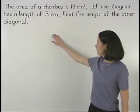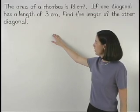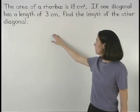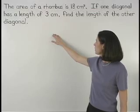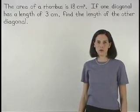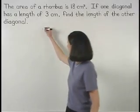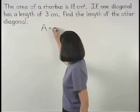The area of a rhombus is 18 square centimeters. If one diagonal has a length of 3 centimeters, find the length of the other diagonal. Remember that the formula for the area of a rhombus is 1 half diagonal 1 times diagonal 2.